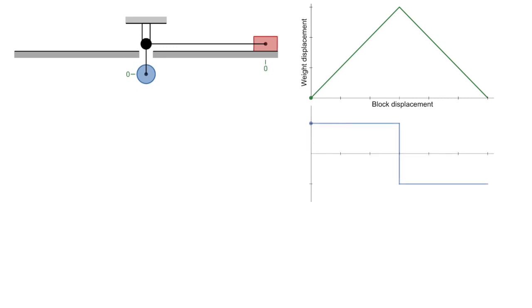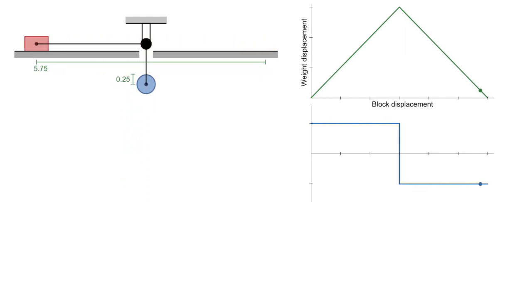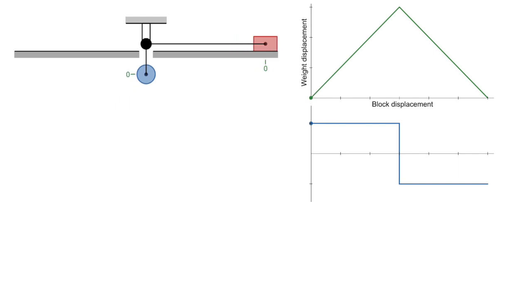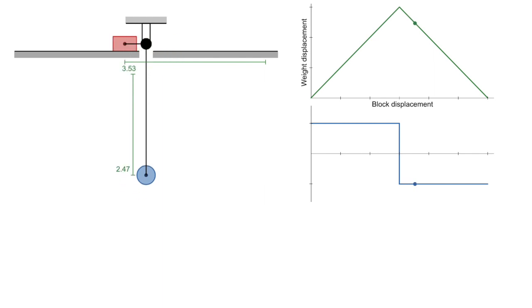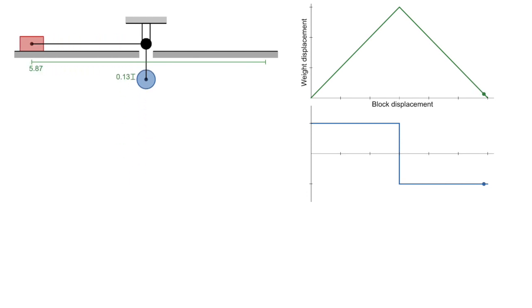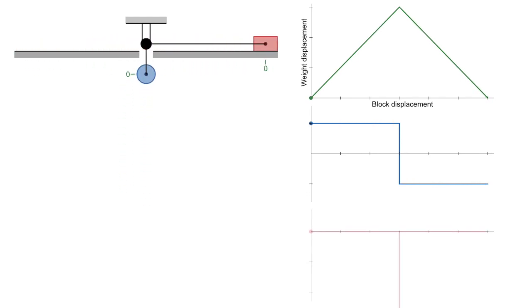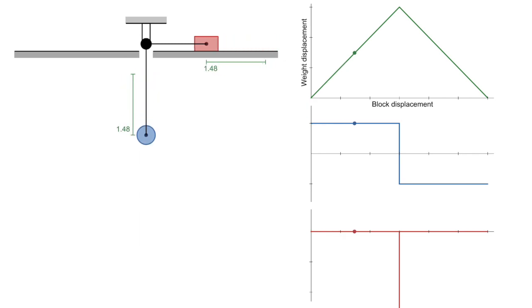Let's look at the derivative of this displacement graph. This shows the ratio of the velocities of the weight and the block for a given displacement of the block. At first the velocities are the same, so the ratio is 1, and then the block gets to the other side and it becomes negative 1.